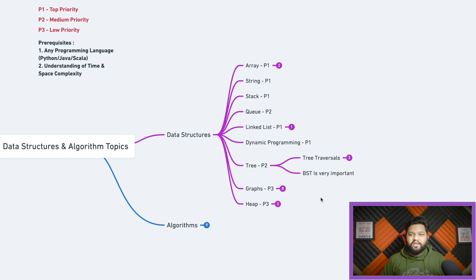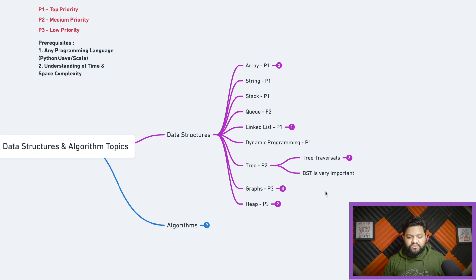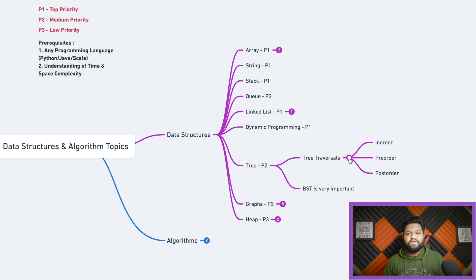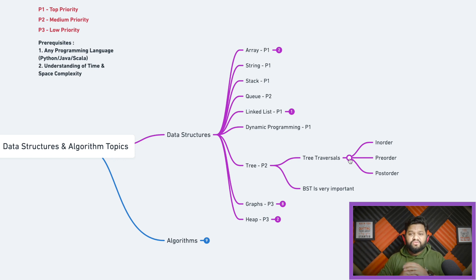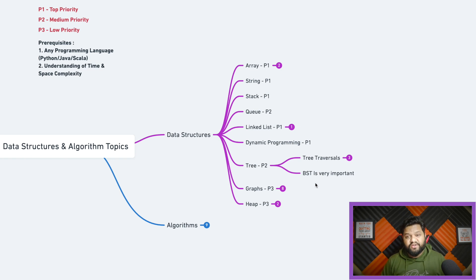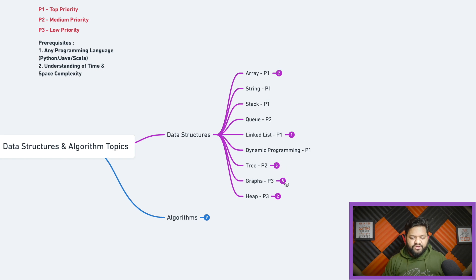Tricks are labeled P2 (medium priority) — complete P1 topics first, then move to P2, then P3. In the tree section, the things asked most often were tree traversals: in-order, pre-order, and post-order — their complexities and common questions. Examples include finding the sum of every root-to-leaf path, finding the diameter of a tree, finding the height of a tree, and calculating the sum of all leaf nodes. Binary search trees (BST) were also asked multiple times, so practice that part as well.